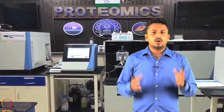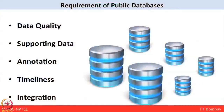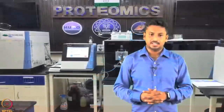What are the principal requirements of a public database? First, data quality — the data should be curated and of high quality. Next, supporting data — database users need to examine the primary experimental data either in the database itself or via cross-references to network-accessible laboratory databases. Third, deep annotation — ancillary information should be attached to each data object. Fourth, timeline — data should be available on an internet-accessible server within a few days of publication. Finally, integration — each data object should be cross-referenced to related biological entities in other databases.